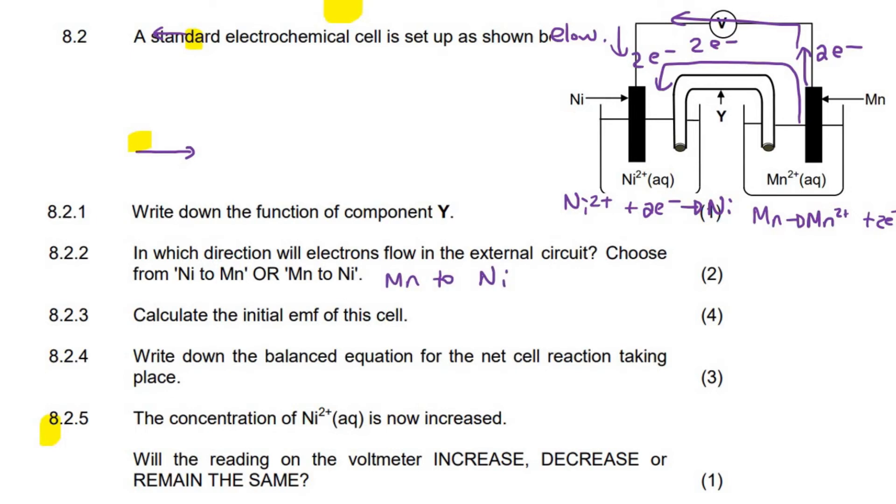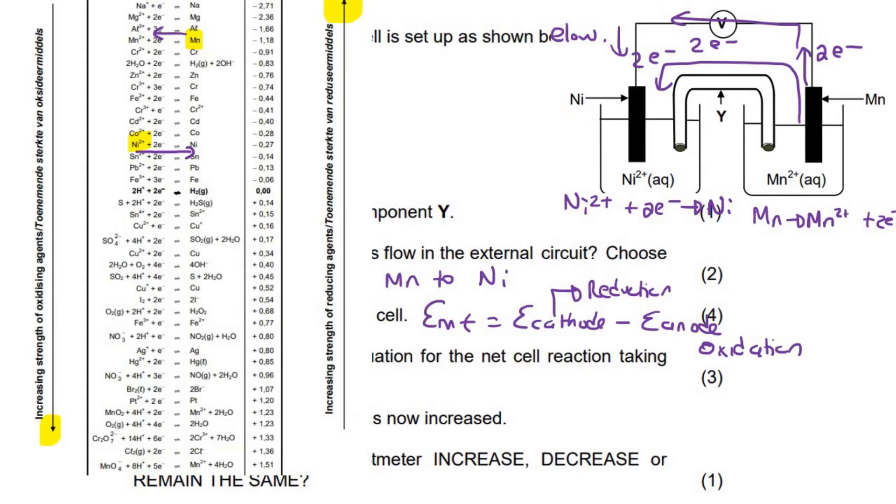Next question says, calculate the initial EMF. Now EMF is a formula on your formula sheet. It's the cathode minus the anode. Now cathode is always the place where reduction happens. And then anode is always the place where oxidation happens. So you should know by now that a reaction that's written from left to right like this is a reduction reaction. And a reaction that's written from right to left like this is oxidation.